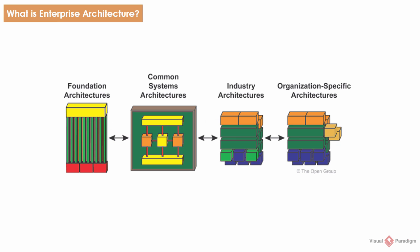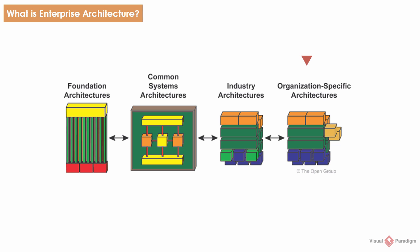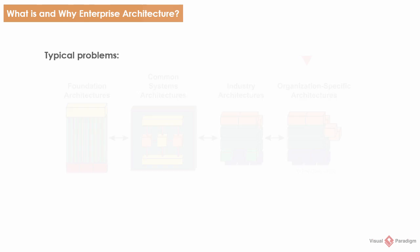The figure here shows the architecture continuum. The architecture continuum illustrates how architectures are evolved across a continuum ranging from foundation architectures, such as the one provided by TOGAF, through common systems architectures and industry architectures, and to your own organization-specific architectures. So why do we build an architecture? The main reason is to solve problems. Here are some examples.